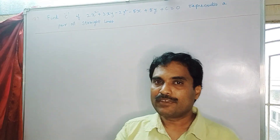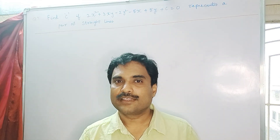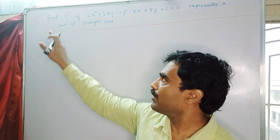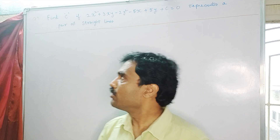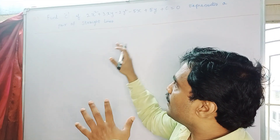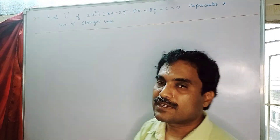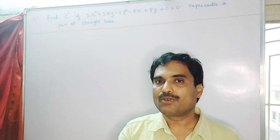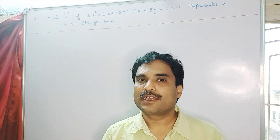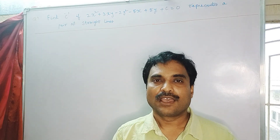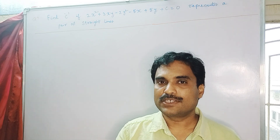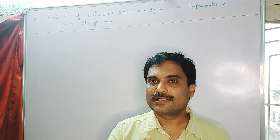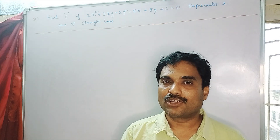They have given an equation of a conic and are saying that it represents a pair of straight lines, so we need to find the value of C. You should remember the condition for any conic to represent a pair of straight lines: abc + 2fgh - af² - bg² - ch² = 0.